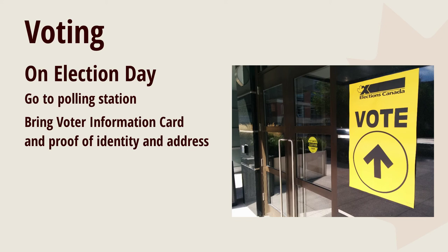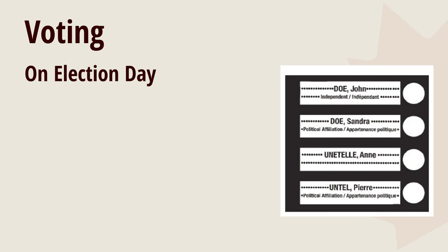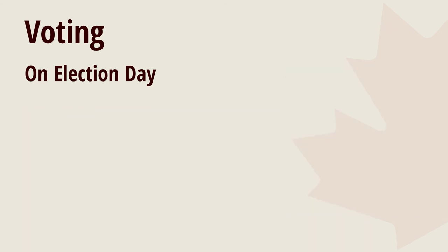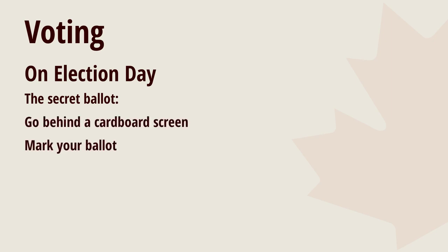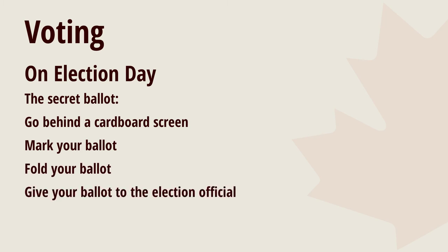A photo ID is best for proof of identity. Number five is marking the ballot, or voting: you must make an X in the circle next to the name of the candidate of your choice — here's an example of what a ballot looks like. Number six: remember, voting is secret, so you will go behind a cardboard screen and mark your ballot, then fold it so nobody sees who you voted for, and give it to the election officials.